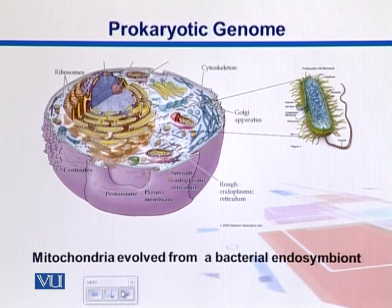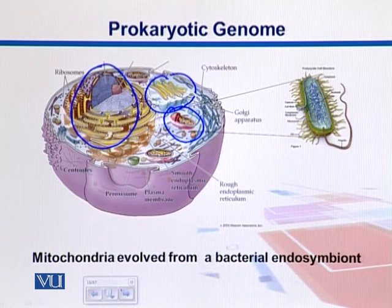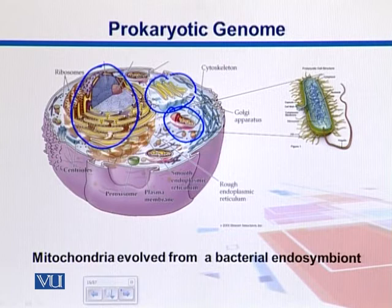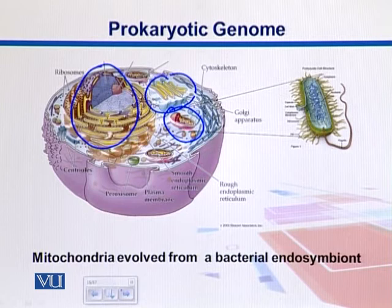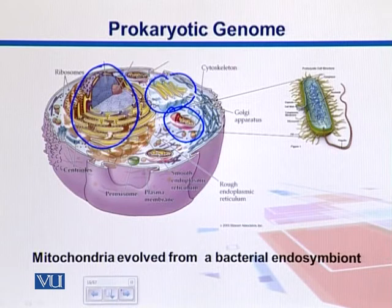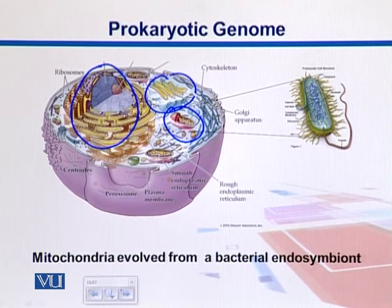Here we see a comparison between a eukaryotic cell and a prokaryotic cell. In eukaryotes, we have all those membrane-bound organelles present — one of them is mitochondria, which is involved in respiration, the process by which food is broken down into energy. There is a hypothesis that mitochondria actually evolved from a bacterium, called the endosymbiont hypothesis.